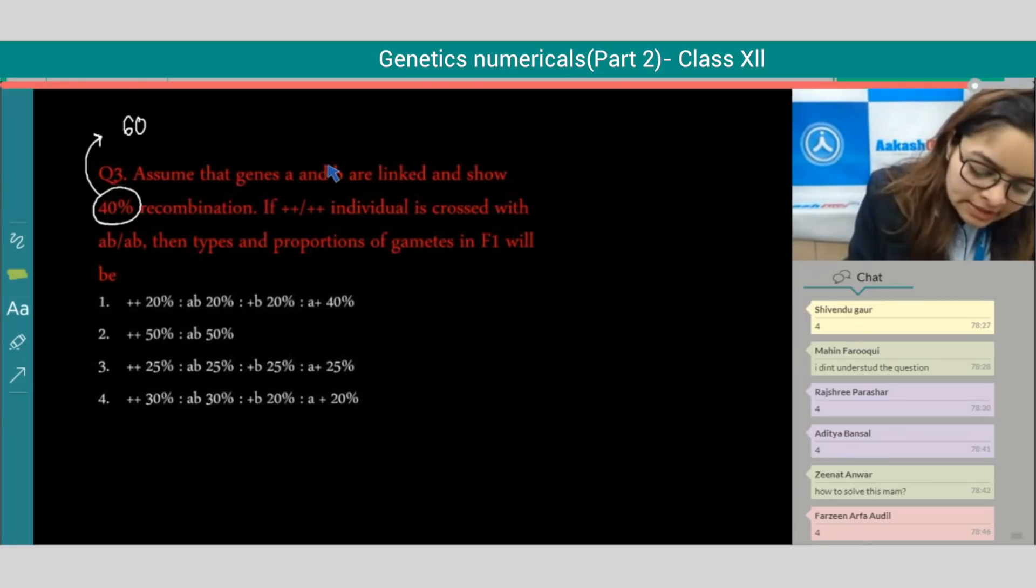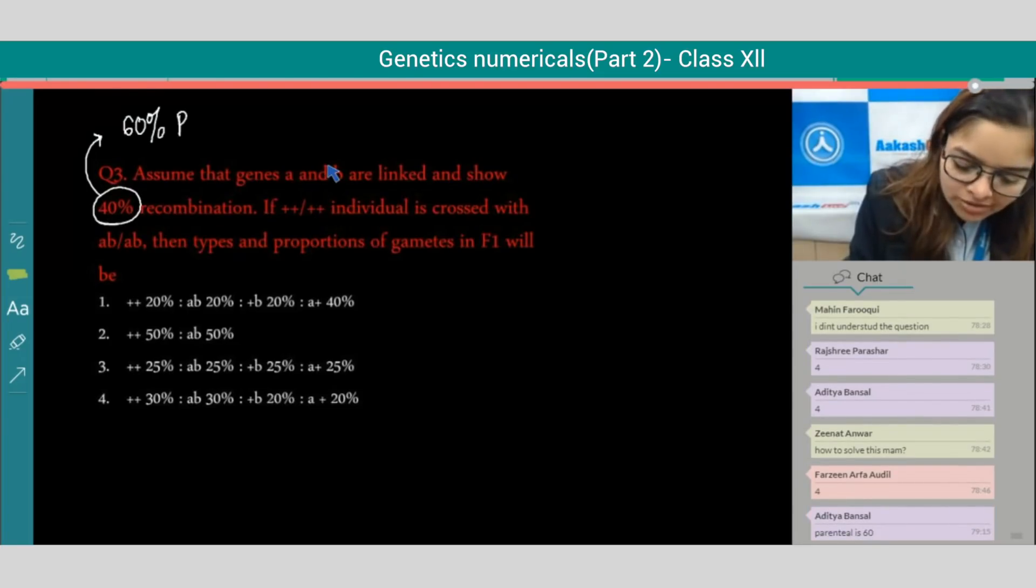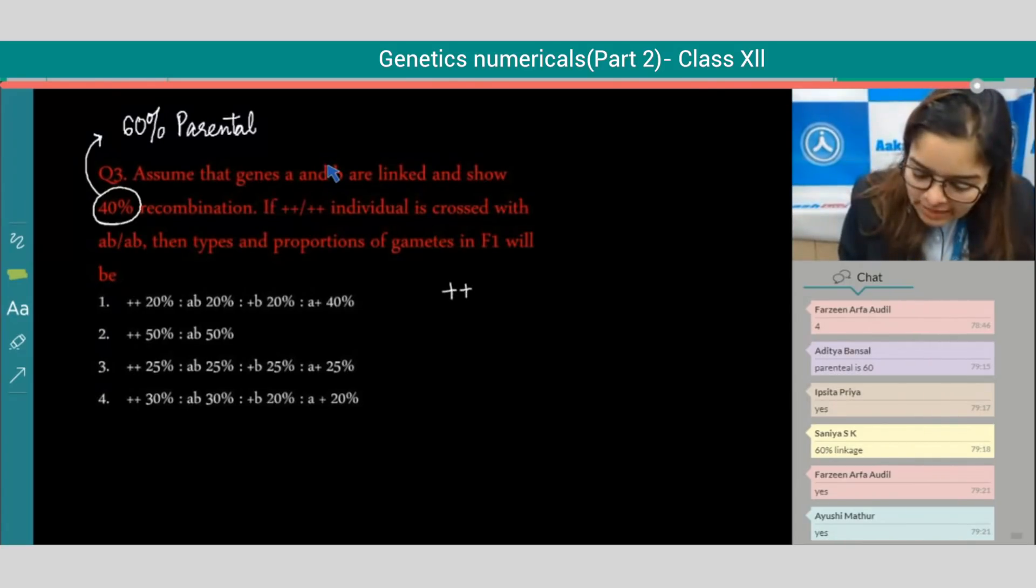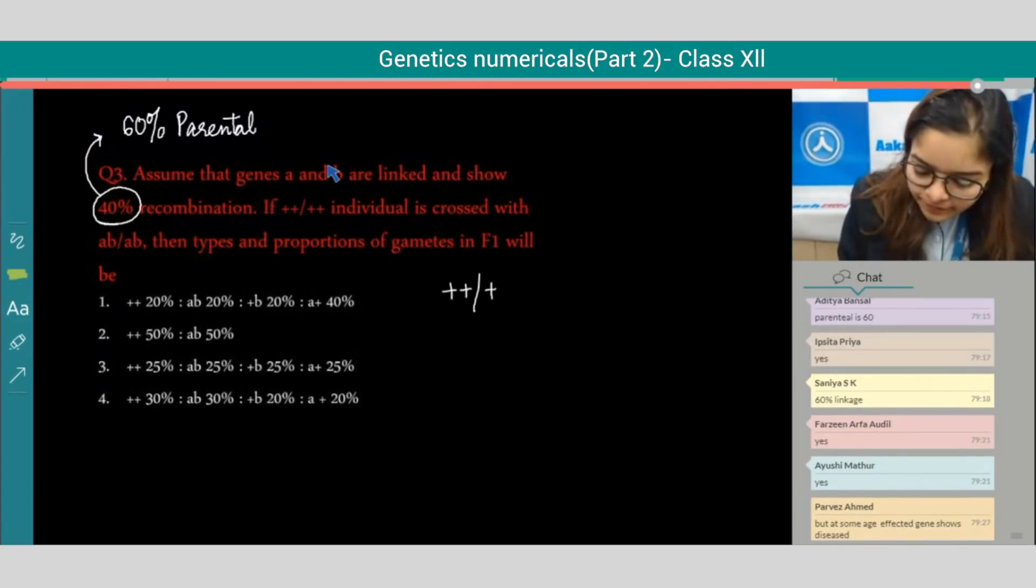Then you can see 60 percent of the parental combination. Exactly correct - 60 percent parental. The parents are plus plus and AB. These are the parents.